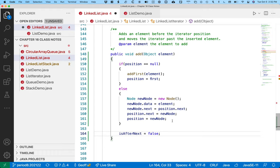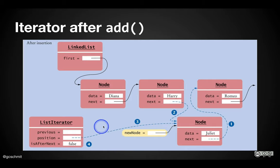Questions about add? Great question about previous — we didn't do anything with previous, we just totally ignored it. The reason being: we only use previous so that we can remove nodes, and we can only remove nodes if we just called next. So we only really care that previous is updated when we call the next method, and then we use it in the remove method. If we're in any other method, we just kind of ignore it because it doesn't matter.